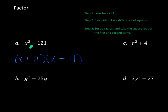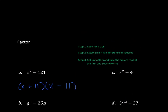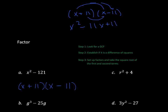It's called the difference of squares because of the minus sign between them. To verify, let's FOIL (x + 11)(x − 11): x times x is x squared; x times negative 11 is negative 11x; 11 times x is positive 11x; positive 11 times negative 11 is negative 121. The middle terms cancel out, and we're left with x squared minus 121 — exactly what we started with, so we factored correctly.